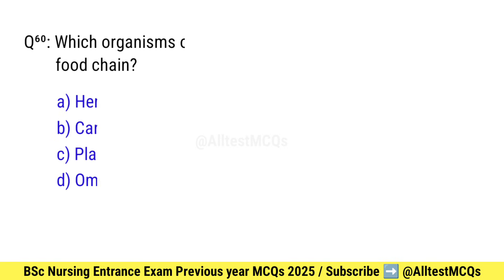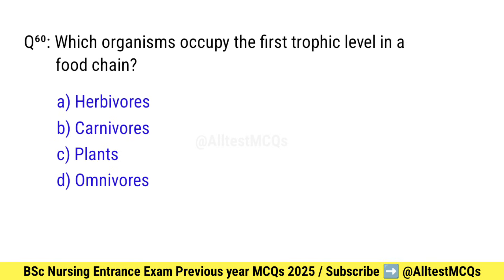Question number 60. Which organisms occupy the first trophic level in a food chain? Right option is C: Plants.